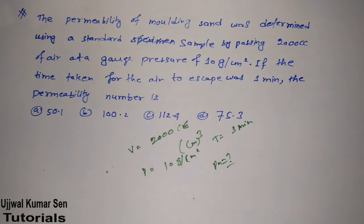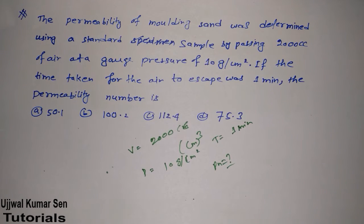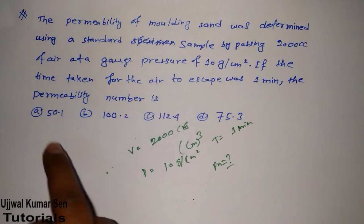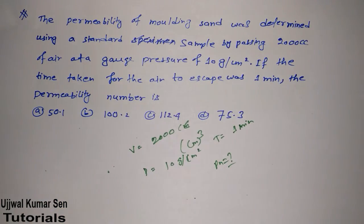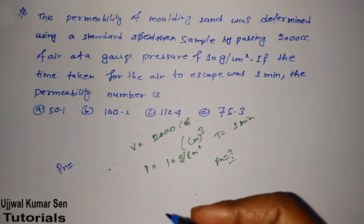We need to find PN. Here is my approach for solving any GATE numerical problem if you already know the formula: first go to the end of the question to find out what you need to find — here it is PN. Then write the formula PN = VH / PAT. Next, identify which values from the question match each variable. This reverse approach is very efficient.